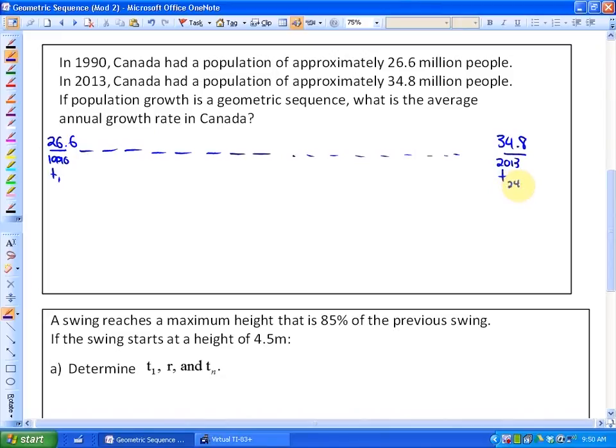So if you'd like to use the formula, the formula would suggest this: Tn, which is the general term, is equal to t1 times r to the n minus 1. The value of the Nth term is 34.8, so this would be 34.8 equals 26.6 times the ratio times n minus 1, and n for the last term is 24 minus 1. So we would get 34.8 equals 26.6 times r to the 23.